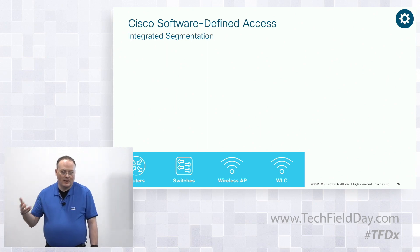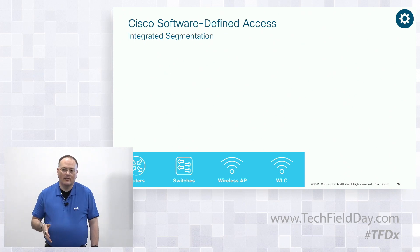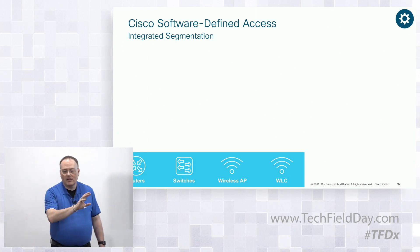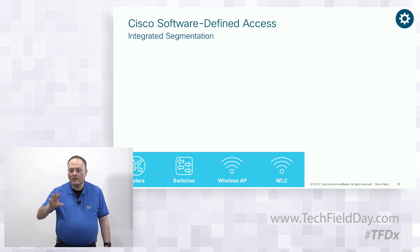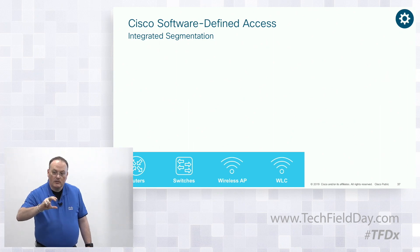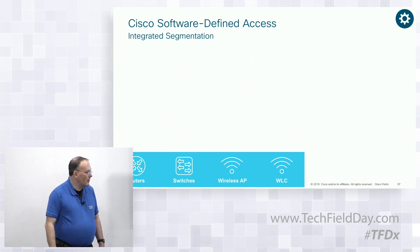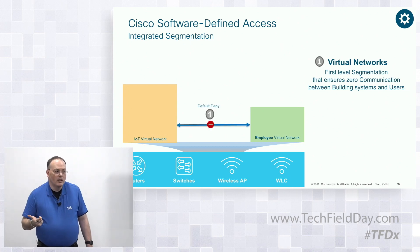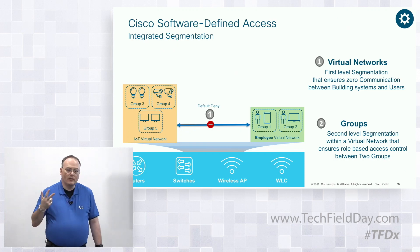Most people just want the same subnet to appear everywhere — and that actually happens by default in SD Access. As soon as you define a subnet and drop it into the fabric, we program it on every fabric edge switch. We use a distributed anycast default gateway: the same subnet is programmed on every fabric edge switch automatically. We take IP and wrap it into VXLAN — not IP-in-IP. This allows us to combine virtual networks (VRFs) with groups (SGTs), providing two levels of segmentation as an inherent property of the fabric.